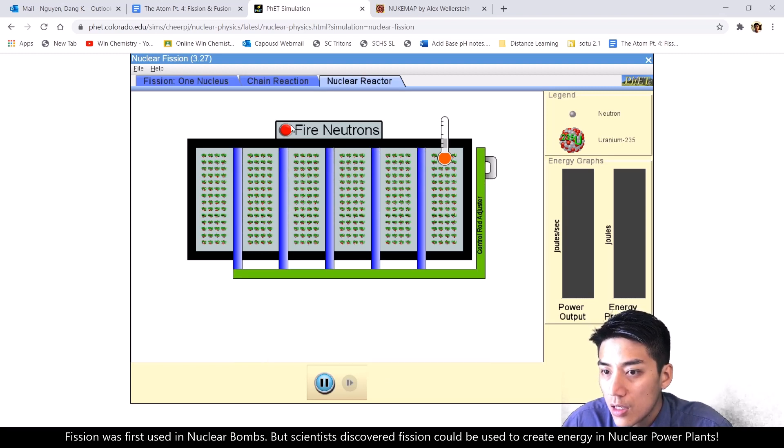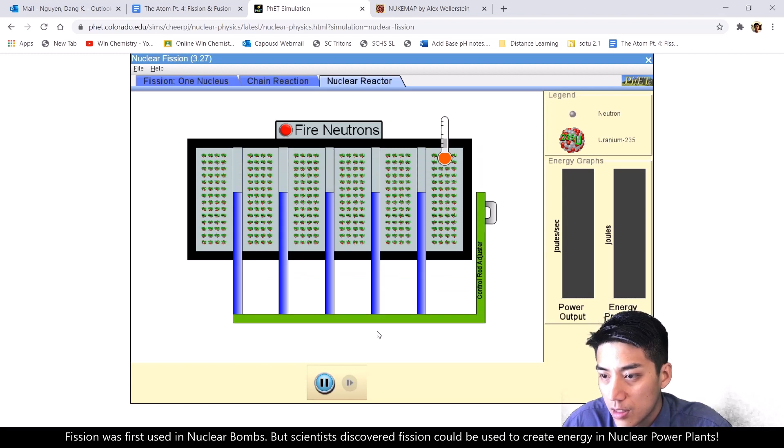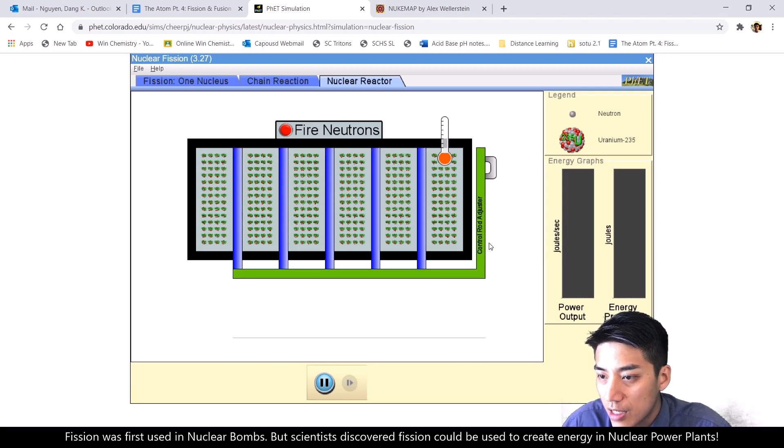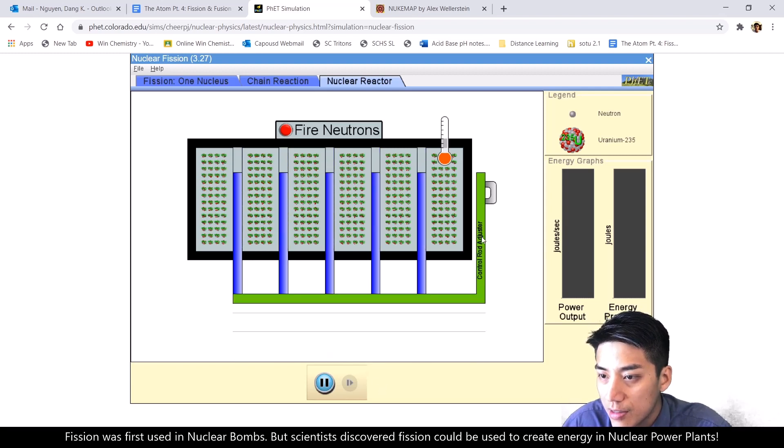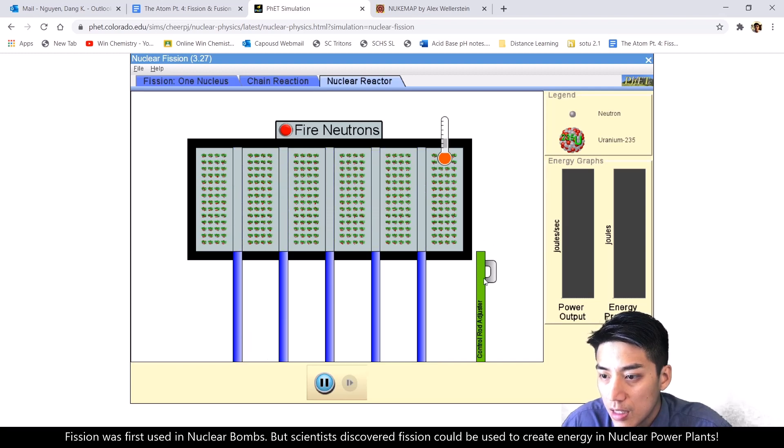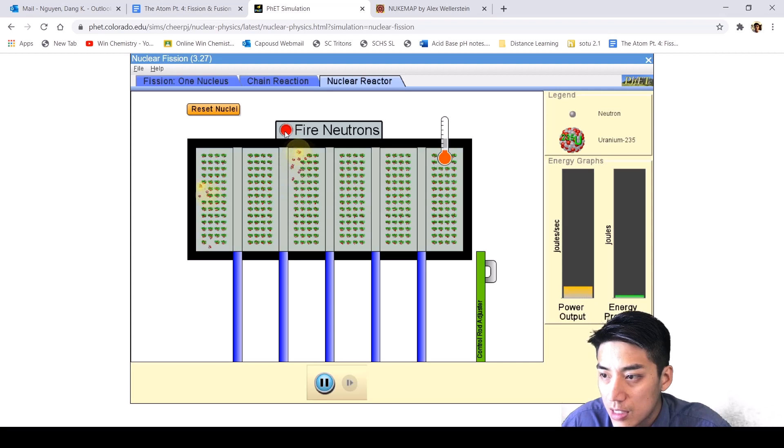So this is a nuclear reactor. It's a model of a nuclear reactor. And I could slide this control rod in and out. So without the control rods, let's just see what happens. So if I just fire some neutrons, the power output is tremendous.